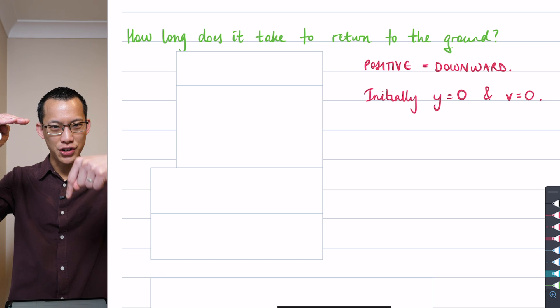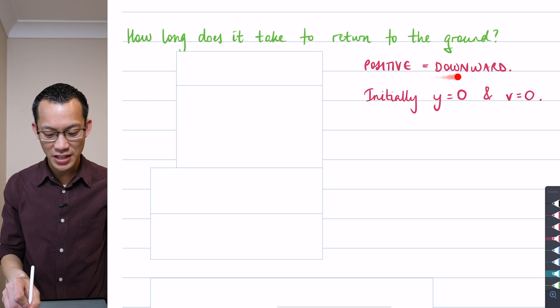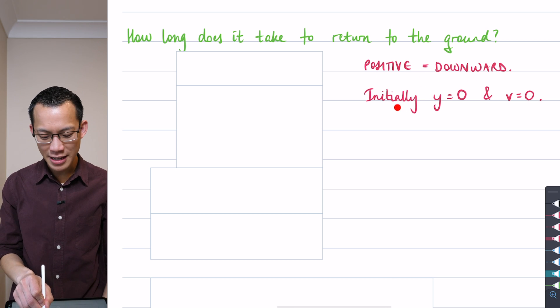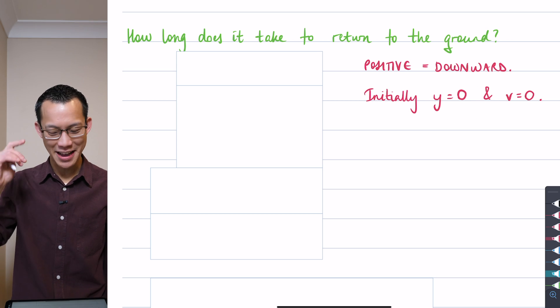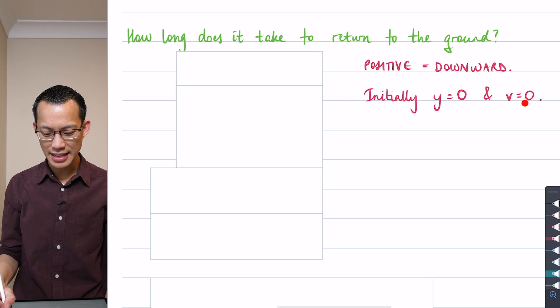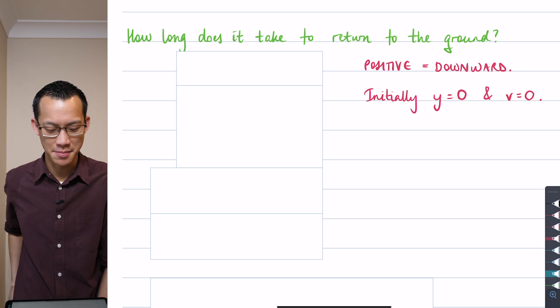And the downward journey is going to be in the positive direction. So you can see there I'm saying positive is now downward. And here's my initial condition. When time zero, I start at the origin, which is the maximum height. And then my velocity is also zero because at the maximum height, I'm not moving. That's why it's the maximum height.